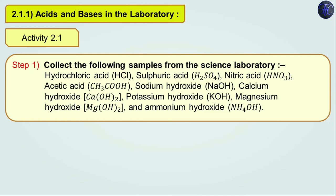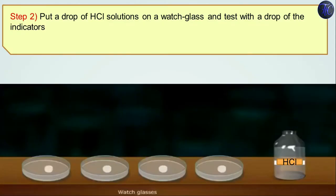For this activity we need to collect some samples from the science laboratory: hydrochloric acid, sulfuric acid, nitric acid, acetic acid, sodium hydroxide, calcium hydroxide, potassium hydroxide, magnesium hydroxide and ammonium hydroxide. However, in this particular activity we will be taking only one acid and one base to understand the chemical properties. So here we have taken HCl solution and four watch glasses, with a drop of HCl solution in each watch glass.